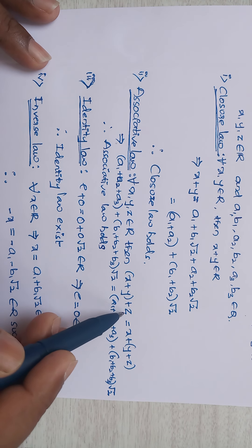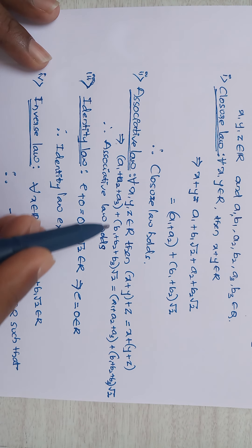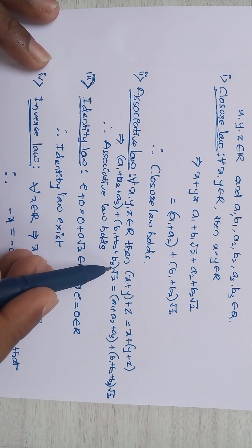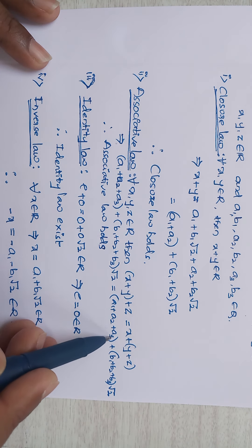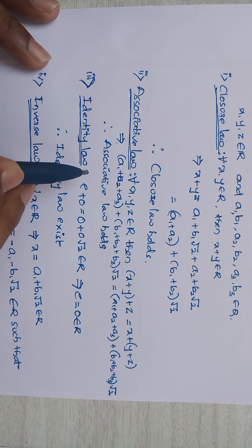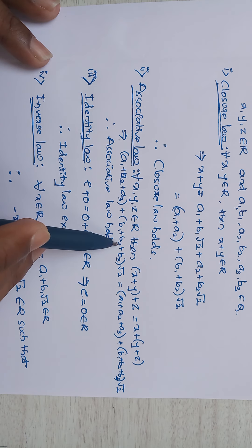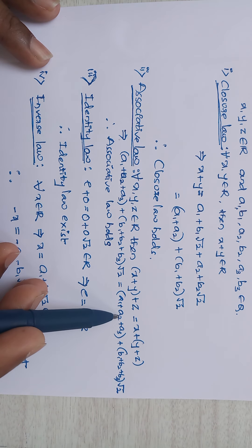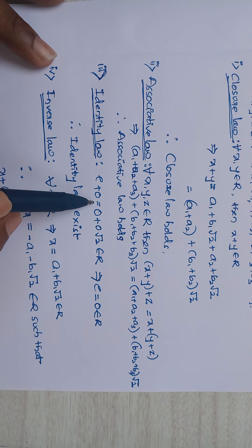Next, associative law: for all x, y, z ∈ R, (x + y) + z = x + (y + z). That implies (a1 + a2) + a3 = a1 + (a2 + a3) and similarly for the b terms with √2. Since a1, a2, a3, b1, b2, b3 ∈ ℚ, substituting all values confirms both sides are equal. Therefore associative law holds.